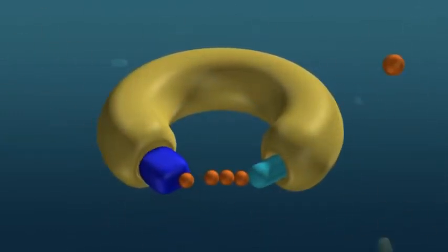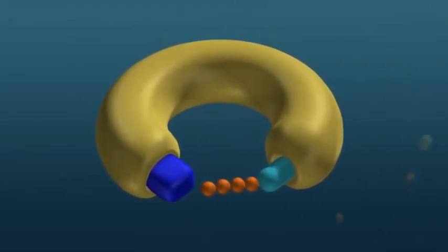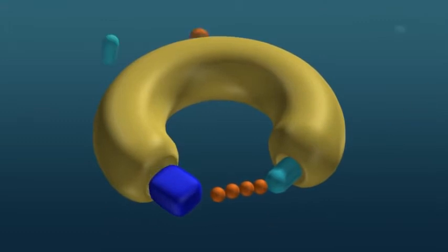This process can be repeated several times to create a polyubiquitin chain on the protein. The creation of this chain is the death knell for the protein.